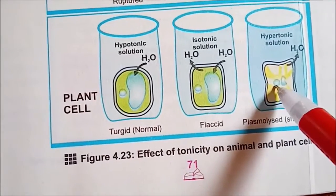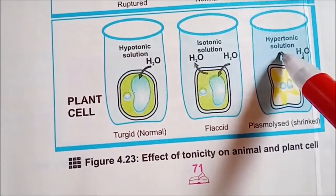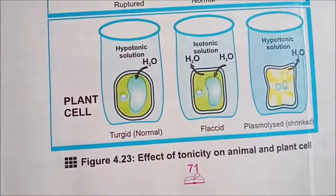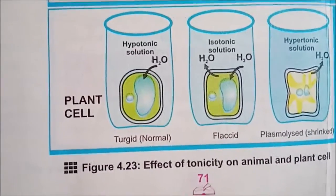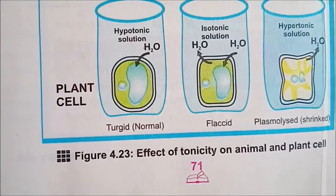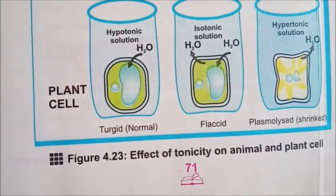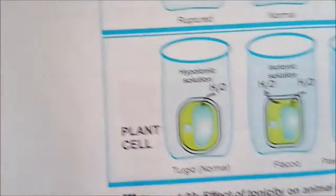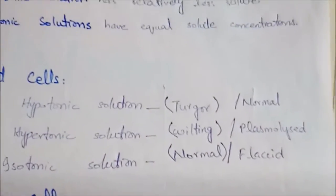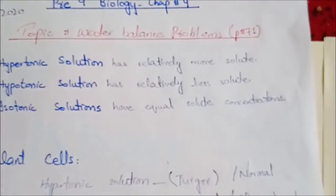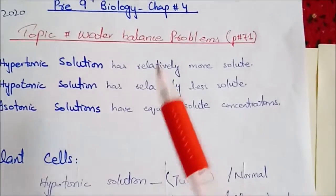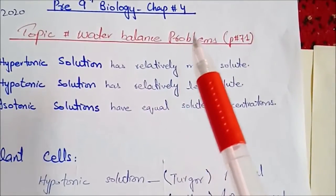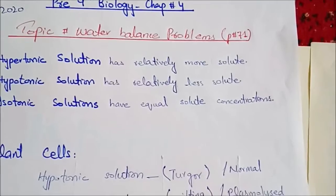Lekin agar aap plant cell ko hypertonic solution mein rakhen — jo bahut zyada gadha hai — to plant cell ke andar se water move karke bahar chala jayega, plant cell shrink ho jayega, uski plasmolysis ho jayegi, wo damage ho jayega. To ye the problems plant cell ke — water balance ke problems. Agar water balance na ho sake plant cells mein to ye problems honge. Ab hum aate hain animal cells pe.